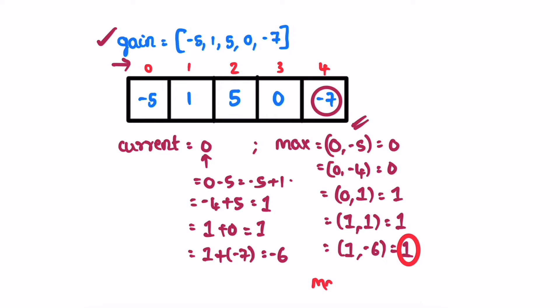Max is equal to one, so one is our output. Now let's implement these steps in a Java program.